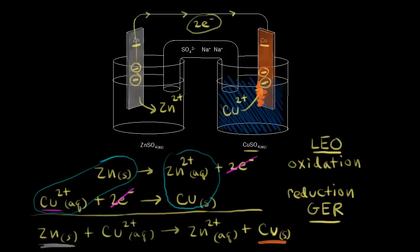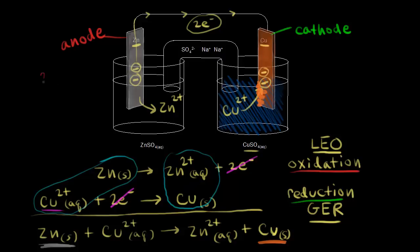Going back to our half reactions and electrodes: oxidation occurs at the anode, so the zinc electrode is our anode. Reduction occurs at the cathode, so the copper electrode is our cathode. A good mnemonic is 'anox' — oxidation at the anode — and 'red cat' — reduction at the cathode.